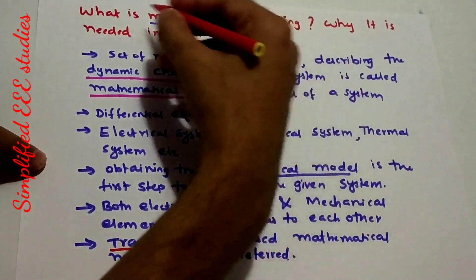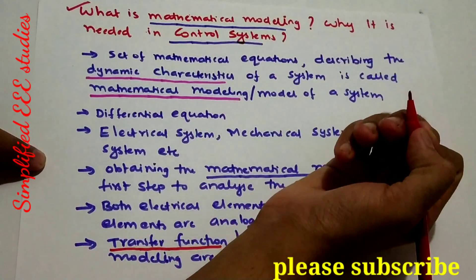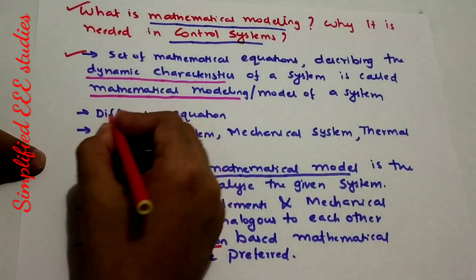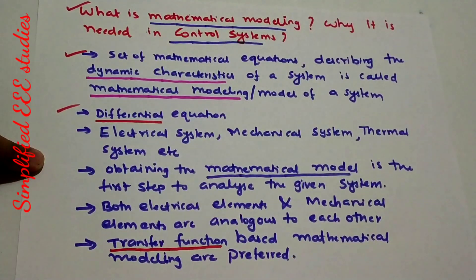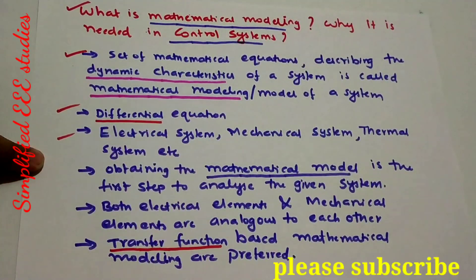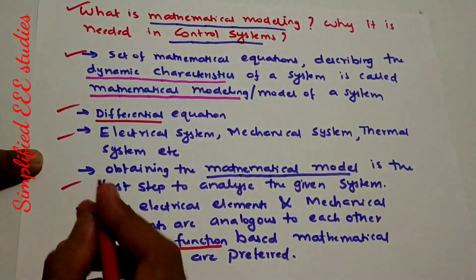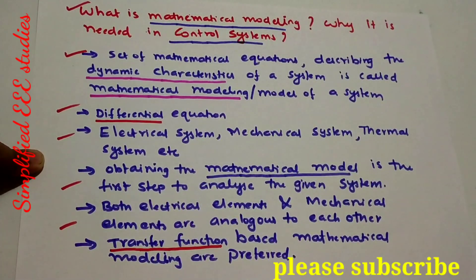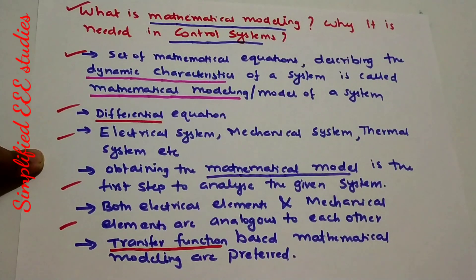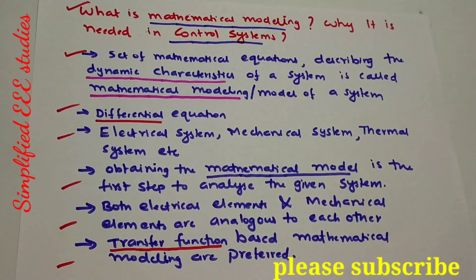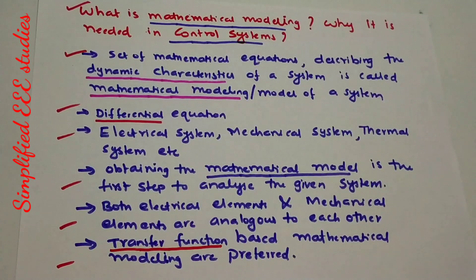I hope you could understand what mathematical modeling is and why it is required. We covered the definition of mathematical modeling, the preference for differential equations, the different types of systems available, that the first step to analyze any system is to formulate mathematical modeling, that electrical and mechanical elements are analogous, and that transfer function-based approach is a major tool normally used in control systems.